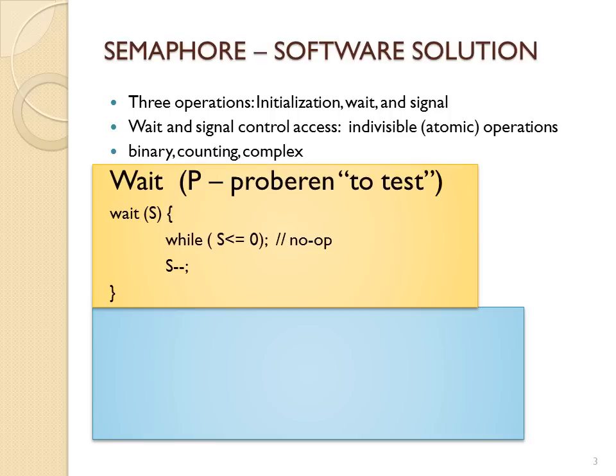The wait operation is usually in the entry code of the processes before the critical data is accessed, and all the processes would run their wait. So if the semaphore is initialized to one, the first process that runs its wait would be the one that owns the critical section. It checks: while S is less than or equal to zero, you must wait. But if S is one, that process decrements S to zero and owns the lock.